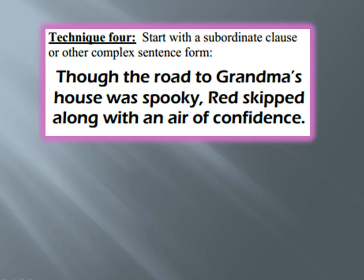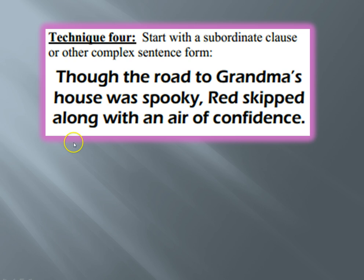Technique four: we've learned all about phrases and clauses, and now you want to put them to work by creating a complex sentence. Complex sentences, especially when they're very descriptive, can be very effective. Here's an example: 'Though the road to grandma's house was spooky, Red skipped along with an air of confidence.' This builds suspense because you're showing cause and effect — the relationship between the spooky road and Red's confidence, which seems like a contrast. Complex sentences are good for this because they show relationships through subordinating conjunctions; here the subordinating conjunction is 'though.' If you've forgotten what a subordinate clause is, go back to our YouTube channel, Channel Nugget, and check out that video on phrases and clauses.